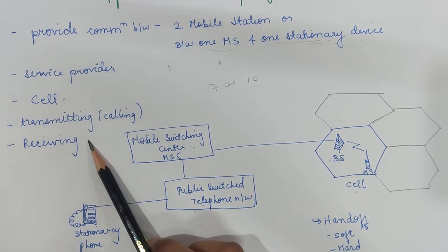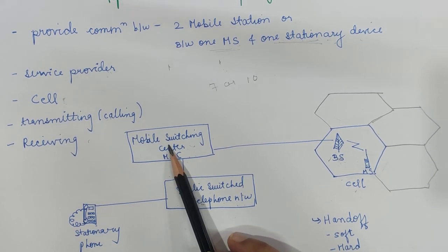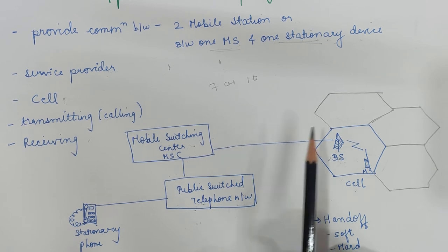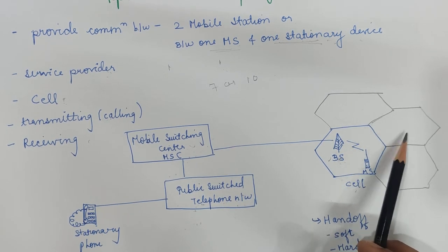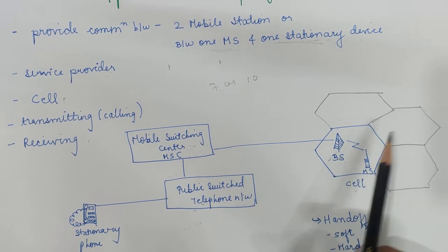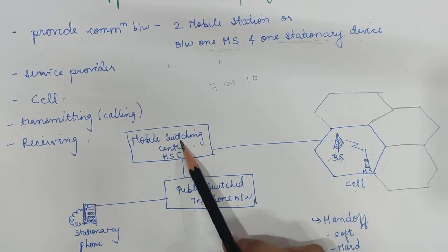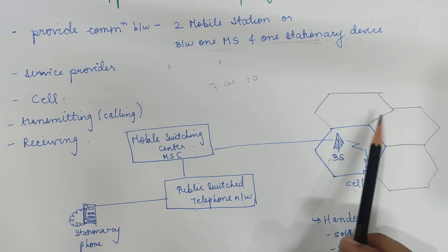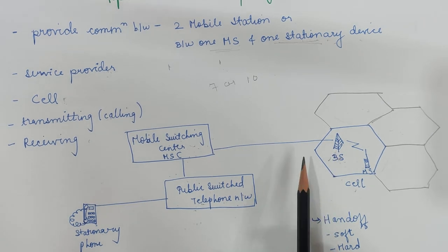For mobile stations, the arrangement goes: first contact to the base station, then to the mobile switching center, then to the main switched telephone network. On the receiver side, when a mobile phone is called, the central telephone office sends the number to the mobile switching center, which searches the location of that particular mobile station via the base stations.